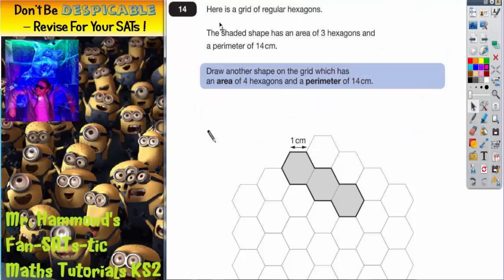Question 14. Here is a grid of regular hexagons. The shaded shape has an area of 3 hexagons and a perimeter of 14. Draw another shaded shape on the grid which has an area of 4 hexagons but also a perimeter of 14.